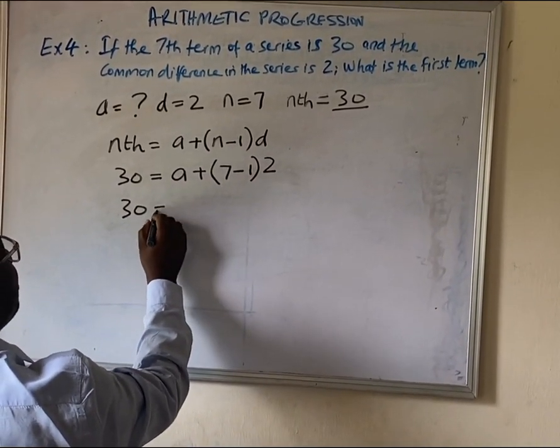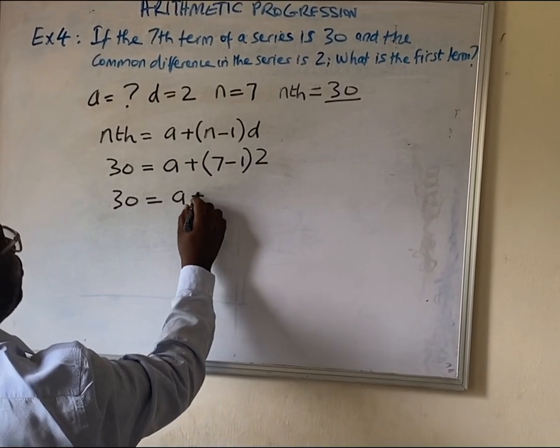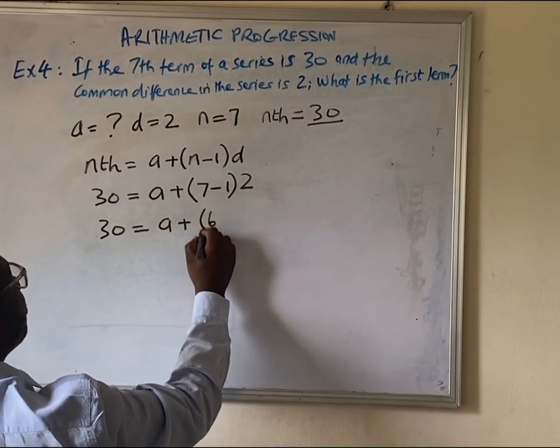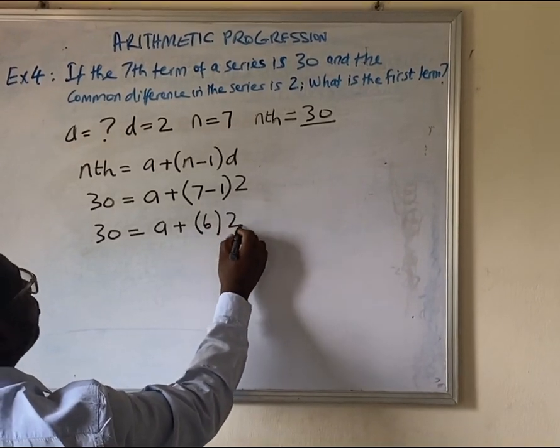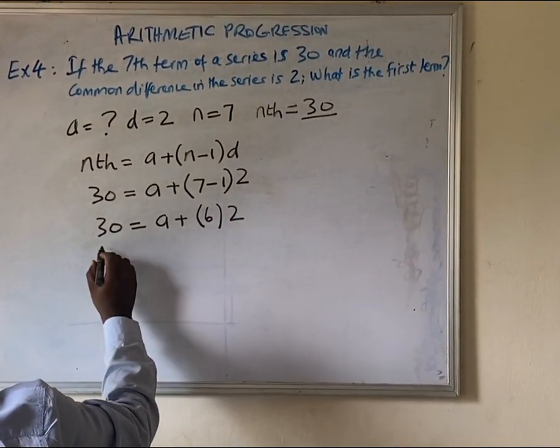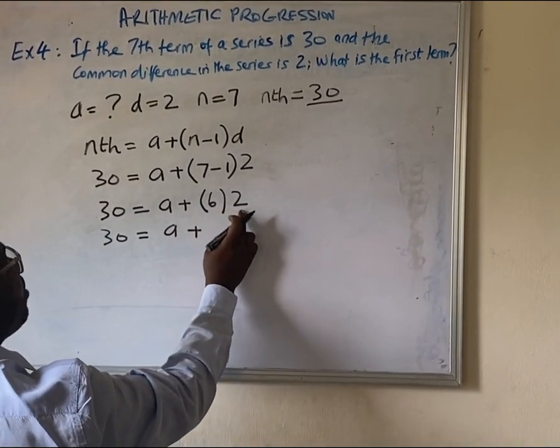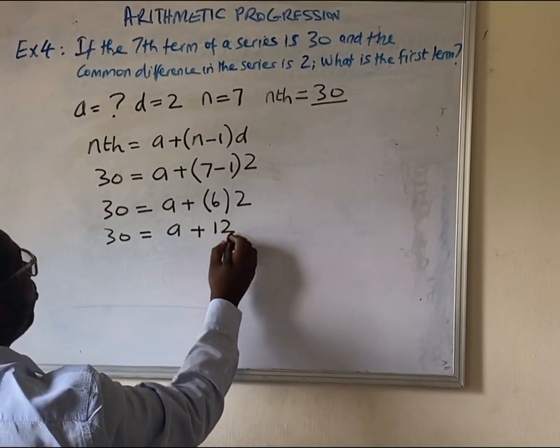Now, we come down with this. 30 equals to a plus 7 minus 1 is 6. So, we close the bracket, and we have 2. We have 30 equals to a plus 6 times 2 is 12.